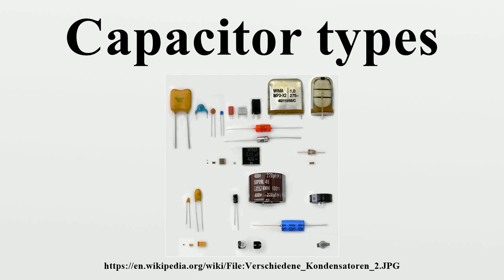The most common kinds of capacitors are: ceramic capacitors, which have a ceramic dielectric; film and paper capacitors, named for their dielectrics; aluminum, tantalum, and niobium electrolytic capacitors, named after the material used as the anode and the construction of the cathode; polymer capacitors, which are aluminum, tantalum, or niobium electrolytic capacitors with conductive polymer as electrolyte. Supercapacitors include double-layer capacitors named for the Helmholtz double-layer phenomenon, pseudo-capacitors named for their ability to store electric energy electrochemically with reversible faradaic charge transfer, and hybrid capacitors that combine double-layer and pseudo-capacitors to increase power density. Silver mica, glass, silicon, air gap, and vacuum capacitors are named for their dielectric.